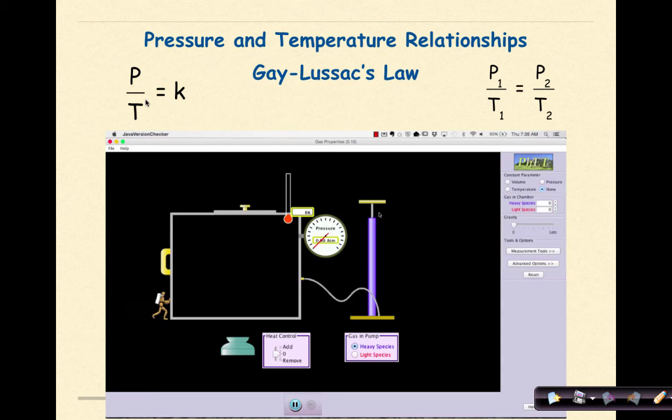If we know the pressure and temperature of a gas at a given volume, and then pressure or temperature is changed, Gay-Lussac's Law allows us to calculate the new pressure or temperature by applying the simple relationship where P1 over T1 equals P2 over T2. Let's see this law in action.